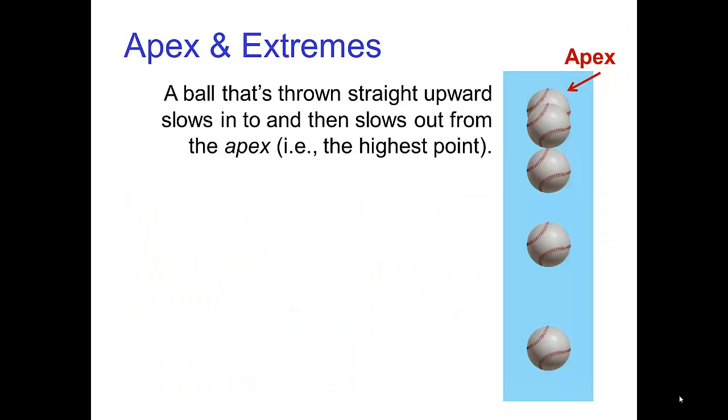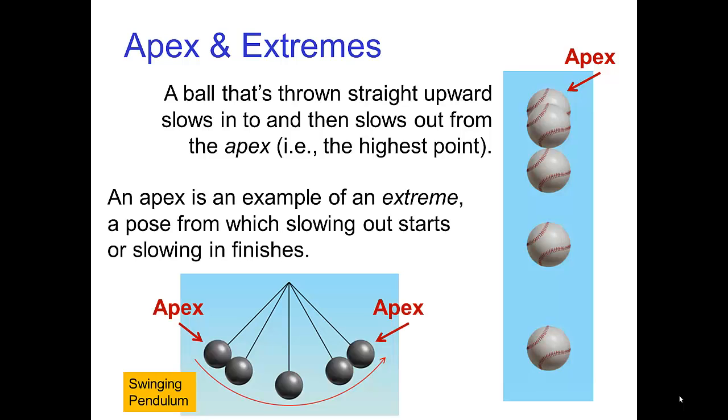A ball that's thrown straight upward slows into and then slows out from the apex, i.e. the highest point. An apex is an example of an extreme, which is a pose from which slowing out starts or slowing in finishes.